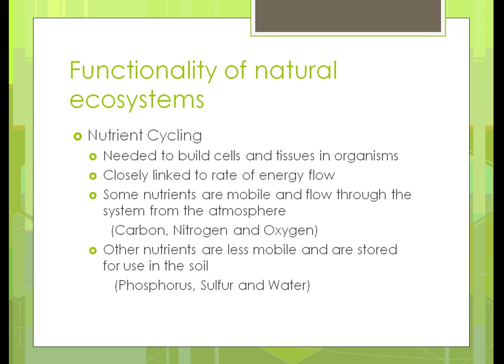Nutrient cycling means that in order for plants to grow larger and give us the fruit we want, they have to build their cells and tissues. Plants take in carbon dioxide and water, grow, and release nitrogen back through the stem down into the soil through the roots. Some nutrients come through the atmosphere — carbon, nitrogen, and oxygen — while others like phosphorus, sulfur, and water are less mobile. Unit 5 will go into more detail on those different cycles.